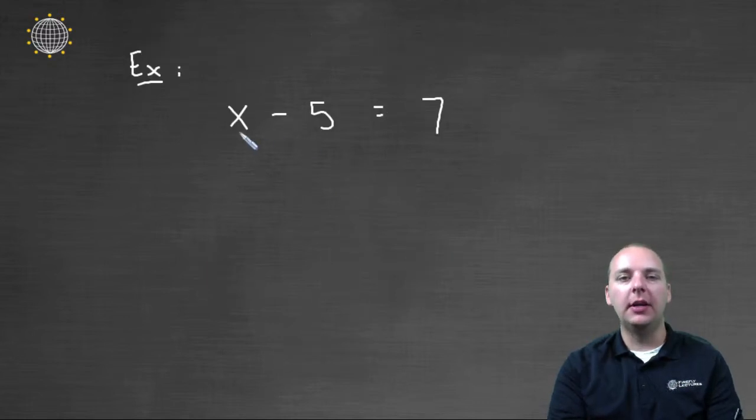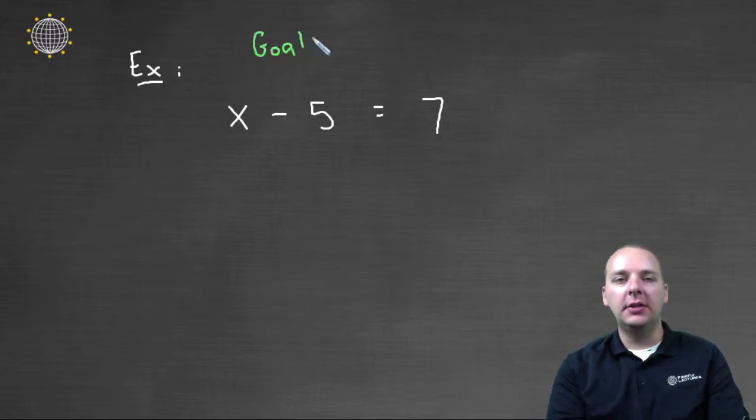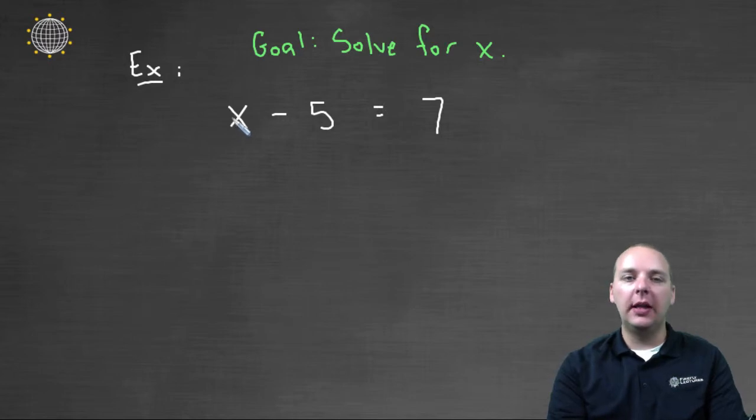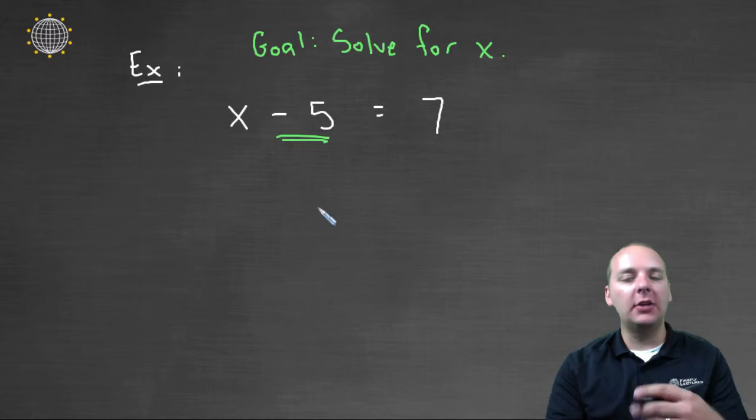Let's think about this for a minute. If we have X minus five equals seven, then obviously you and I both know what our goal is here. Our goal is going to be to solve for X. Meaning get X isolated by itself on the left hand side. But right now I have a minus five,